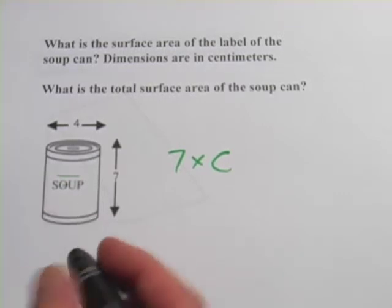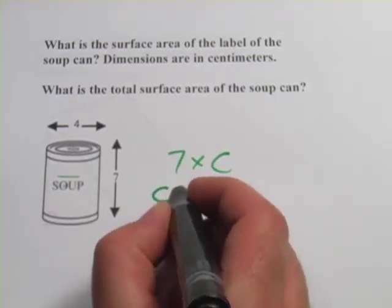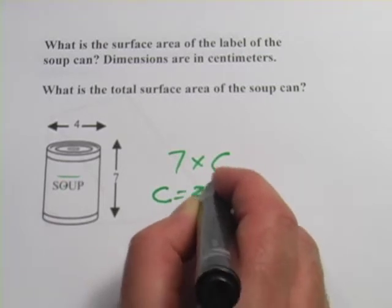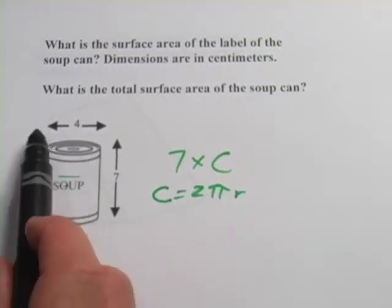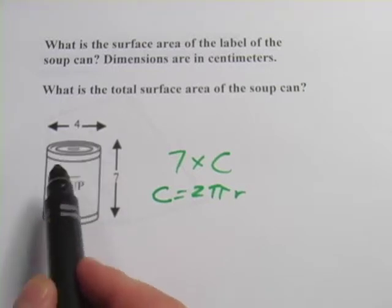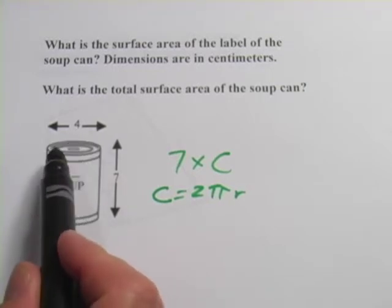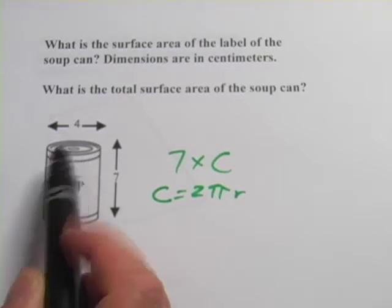Well, how do we figure out the circumference of the circle? The formula for circumference is 2 pi r. And what is the radius we're working with here? Well, it looks like all the way across the top of the circle here is four centimeters. So the radius would be half of that, or two.